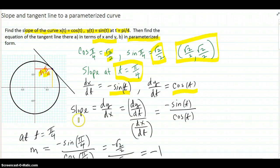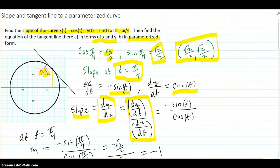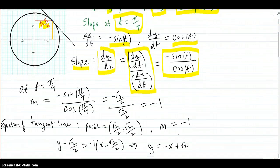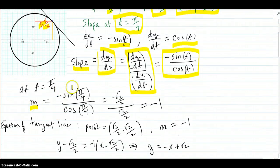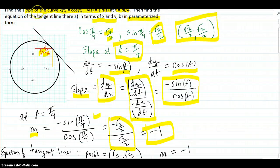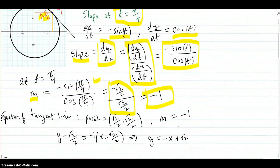The slope on the x-y graph is dy/dx, which equals dy/dt divided by dx/dt. At t equals pi over 4, the slope equals that quotient, which comes out to be negative 1. And that line does have slope negative 1, as you can see. That's all there is to finding the slope.